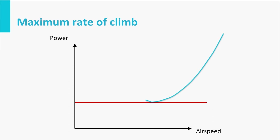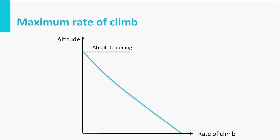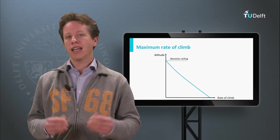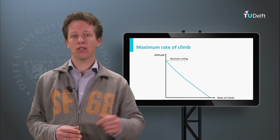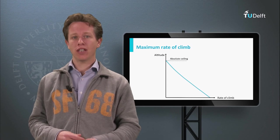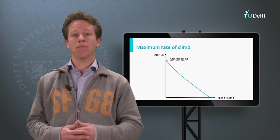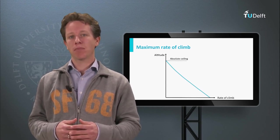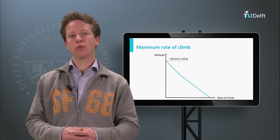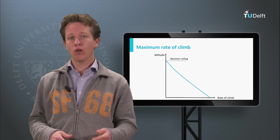This is the condition where the power required and the power available curve just touch each other. You could also observe that the airspeed at which maximum rate of climb is achieved actually increases steadily with increasing altitude. So if I would make a graph with the maximum rate of climb as a function of altitude, it will steadily decrease. The condition where maximum rate of climb equals zero is the absolute or theoretical ceiling of the aircraft where it can fly steadily. Any deviation from the required airspeed — due to for example some turbulence — will result in a change of airspeed, meaning that maximum power available is not sufficient anymore and making the airplane descend again.